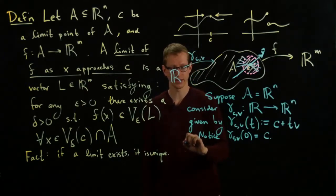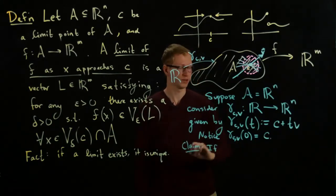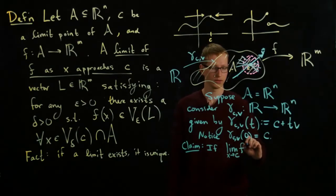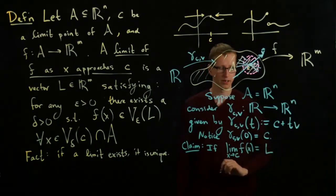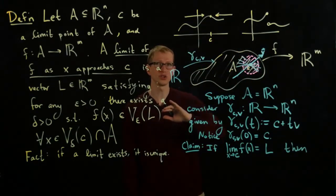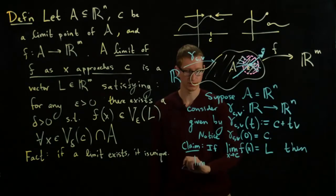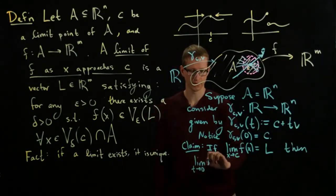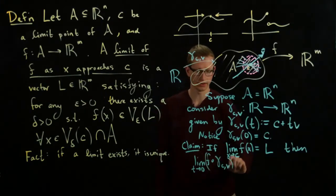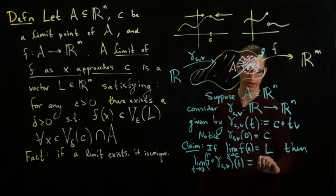And the claim is that, let's call this, let's say claim, if the limit of F as X approaches C equals L, then it makes sense to take the limit of the restriction of this function along this straight line path. And in fact, the limit as T approaches 0 of first applying the path gamma, and then applying our function at any time T is precisely equal to L as well.